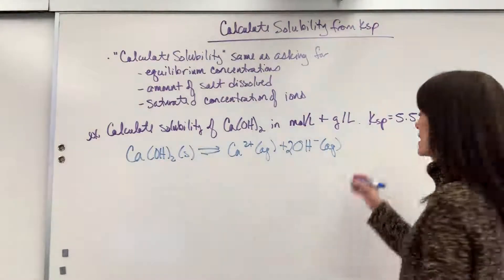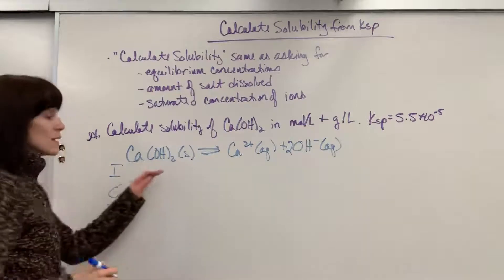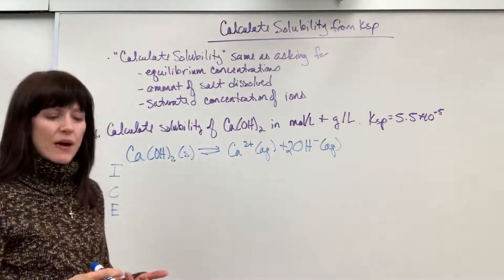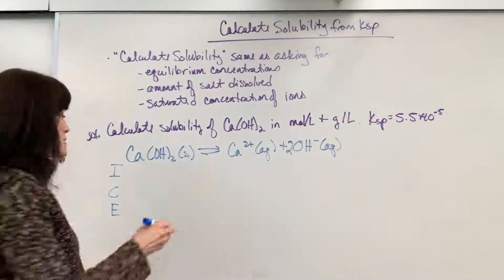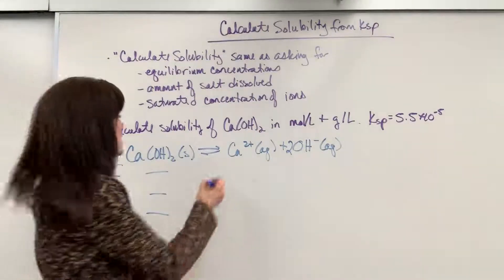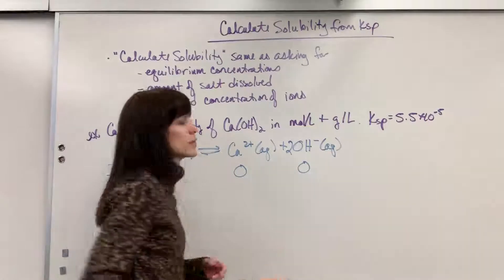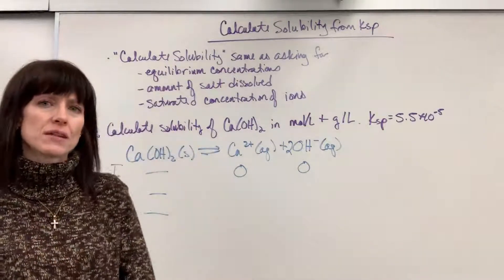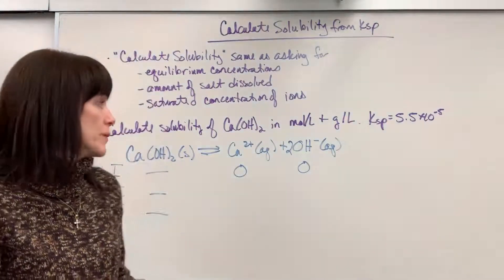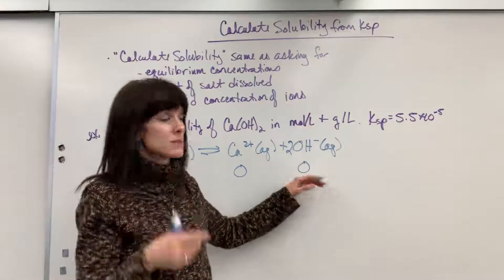Let's go ahead and set up our ICE table. So we've got I, C, E. Now solids we don't use—we don't count solids or liquids in our equilibrium expression because they're constant. So those are dashes. Initially when we put this in pure water we're going to say no calcium and the hydroxide we're going to put zero there. That's going to be considered negligible. I know that we have Kw, but you still put zero. It'll be negligible, really small compared to this.